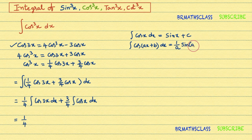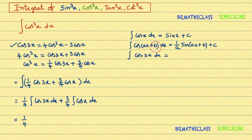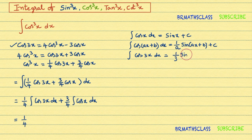It is very easy to understand. From this, we can easily write the integral of cos3x dx. Here, 3x is in the form of ax + b, since 3x = 3x + 0. The x coefficient is 3, and we know the integral of cosx dx is sinx + c. So the integral of cos3x dx equals (1/3)sin3x + c.